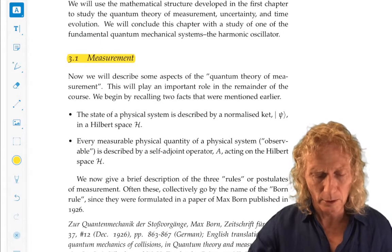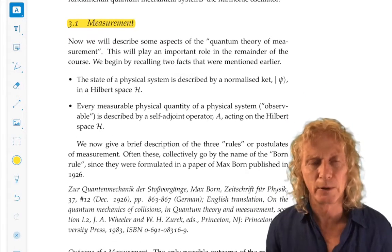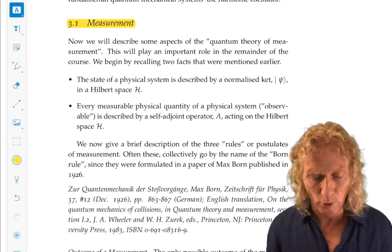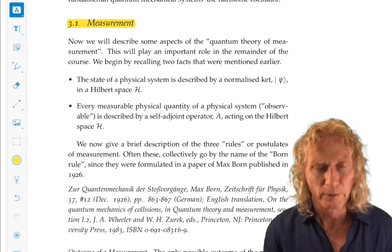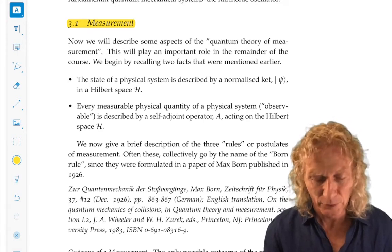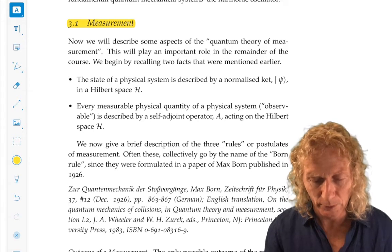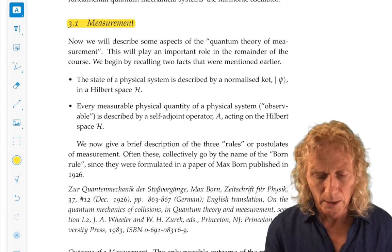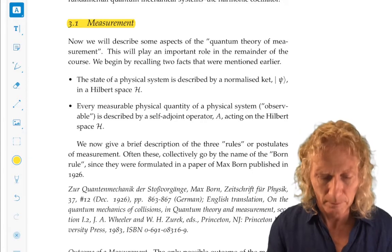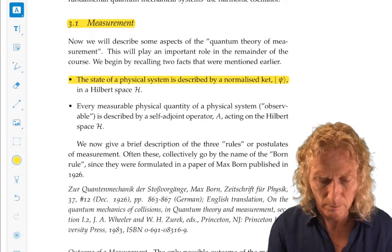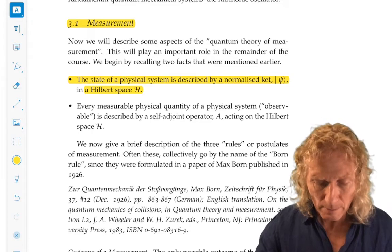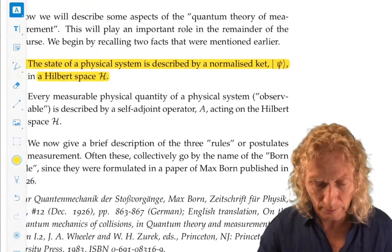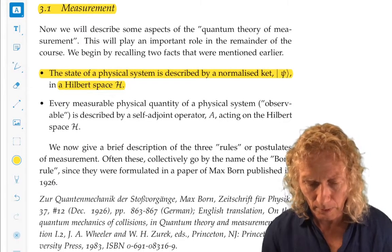We begin by recalling a couple of facts that we've mentioned before. Facts, postulates. The state of a physical system is described by a normalized ket in the Hilbert space script H.